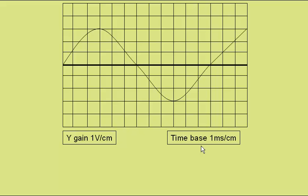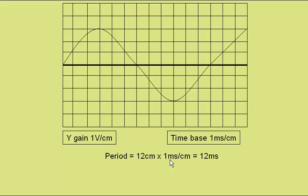Here again, a time base of 1 millisecond per centimetre, and the period from here to here is 12 centimetres, giving a period of 12 multiplied by 1 millisecond per centimetre, or 12 milliseconds. So the frequency — 1 over 0.012 seconds — is 83 hertz.